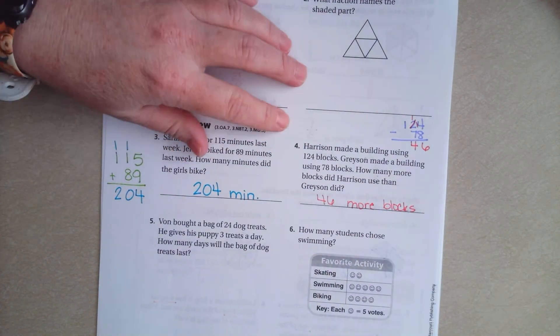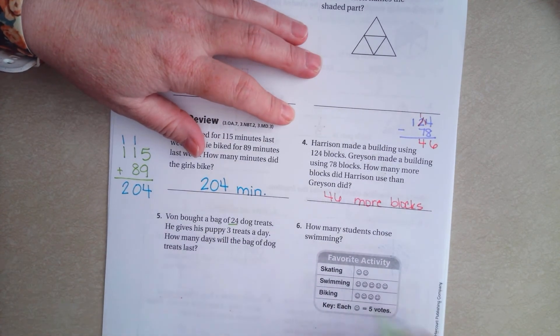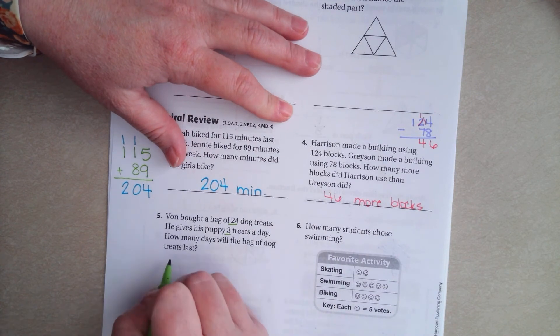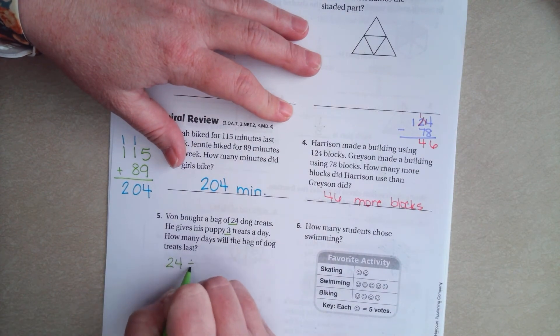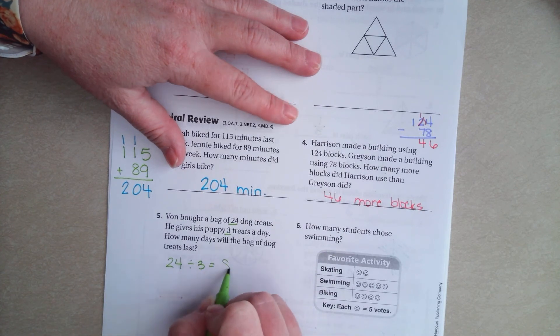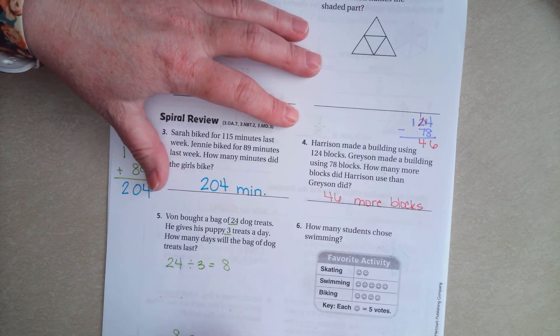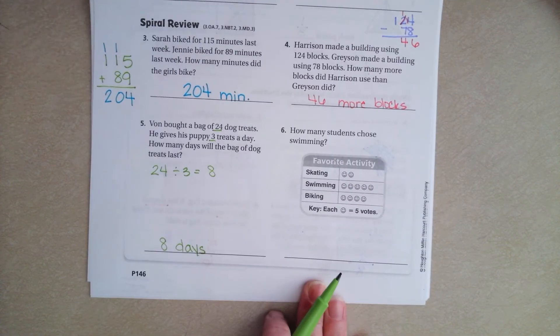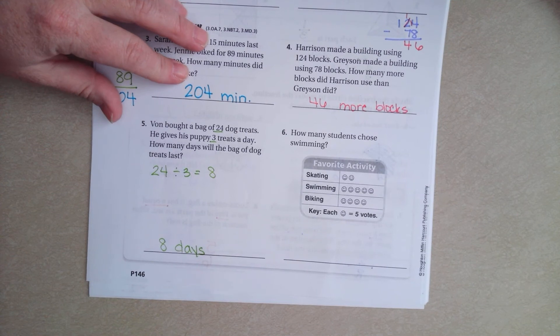All right. Vaughn bought a bag of 24 dog treats. He gives his puppy 3 treats a day. How many days will the bag of dog treats last? Well, 24 divided by 3. So, 3 times what is 24? 3 times 8. So, 8 days. We're going to make sure that we're labeling, guys, because word problem, word answer. You've got to have a label.